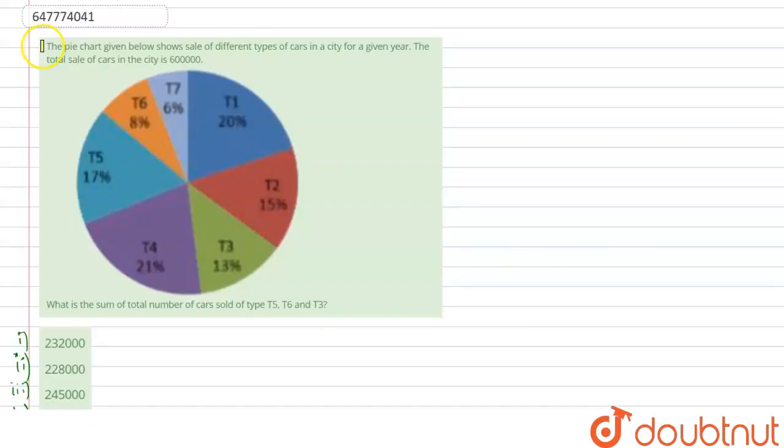Hello everyone, let's solve this question. The pie chart given below shows the sale of different types of cars in a city for a given year. The total sale of cars in the city is 6 lakhs.